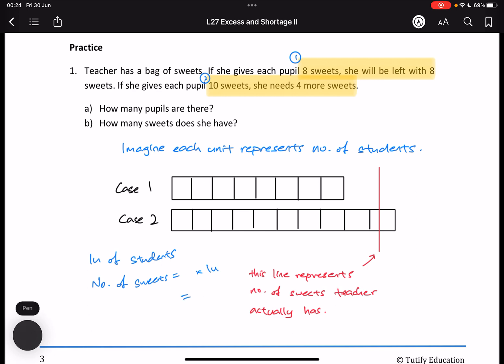If I give each person five sweets, that means I'll give a total of five units of sweets. Okay, so just take note that one unit represents how many students there are. These are the number of students in the class.